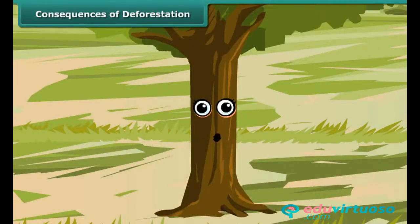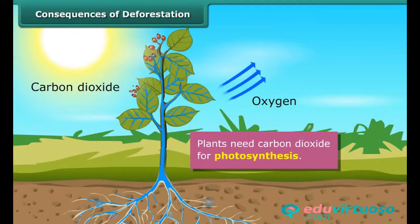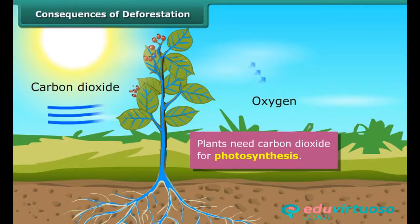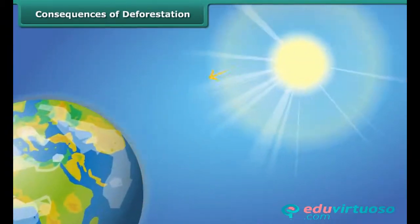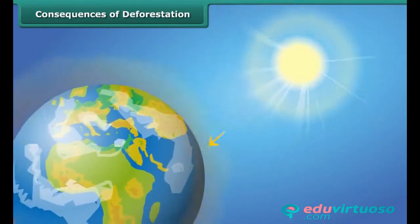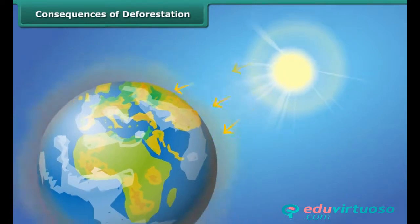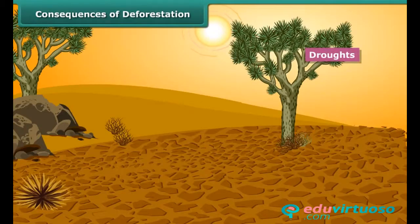You have already studied about deforestation and its various causes. Now, let us discuss some of its consequences. Plants need carbon dioxide for photosynthesis. Few trees would mean that less carbon dioxide would be used up, resulting in its increased amount in the atmosphere. This will lead to global warming as carbon dioxide traps the heat rays reflected by the Earth. The increase in temperature disturbs the water cycle and may reduce rainfall, causing droughts.